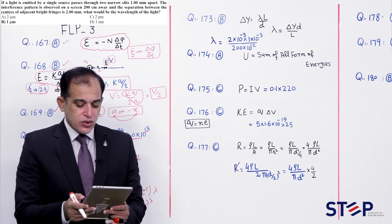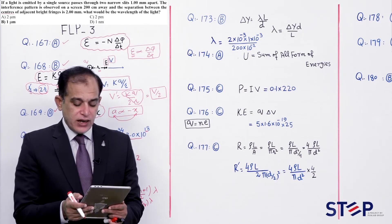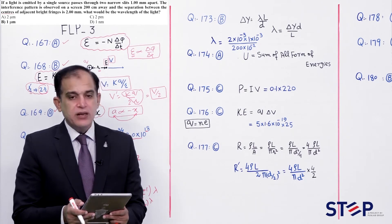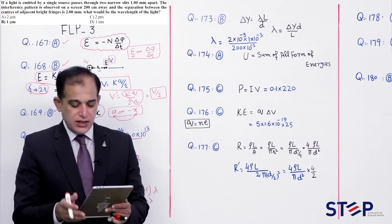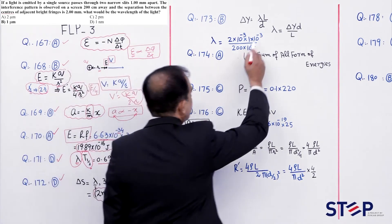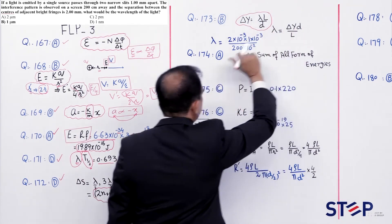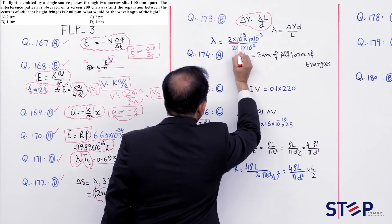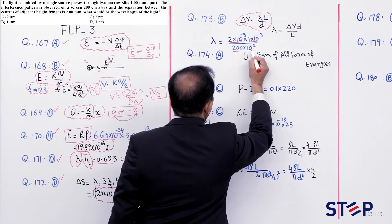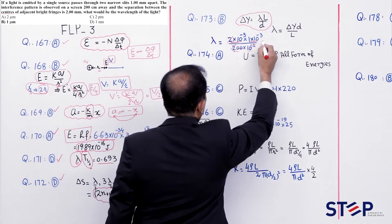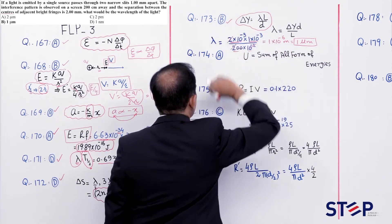Question number 173: Light through two slits 1 mm apart, screen 200 cm away, fringe separation 2 mm. Find wavelength. λ = Δy × D / L = (2×10⁻³ × 1×10⁻³) / (200×10⁻²) = 2×10⁻⁶ / 2 = 1×10⁻⁶ m = 1 micrometer. Correct option: Beta.